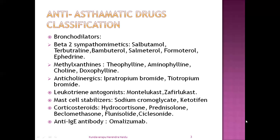So these are the classes of drugs used against asthma: bronchodilators, leukotriene antagonists, mast cell stabilizers, corticosteroids, and anti-IgE antibody drugs.